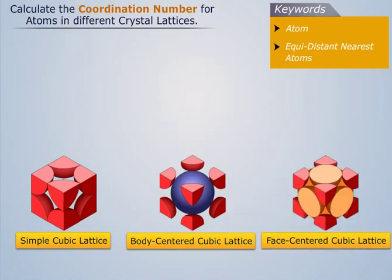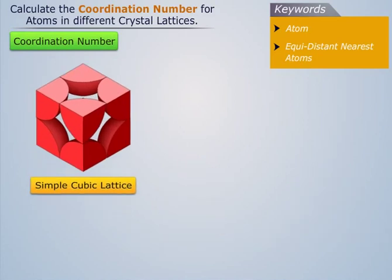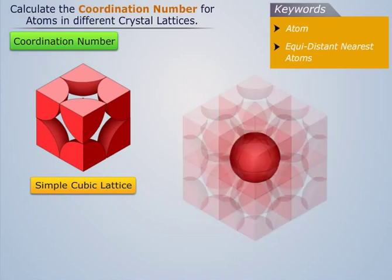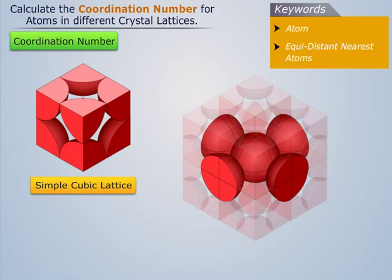Now let's try to calculate the coordination number for the atoms of each of these crystal lattices. We know that simple cubic lattice has eight corner atoms. Here every corner atom is surrounded by four nearest neighboring atoms in the same plane.